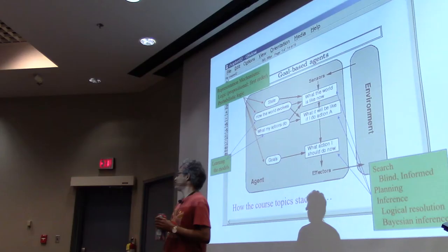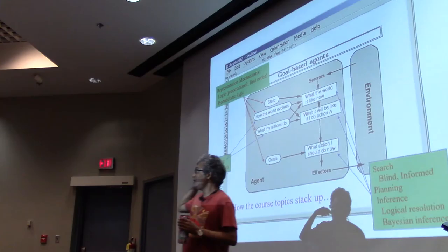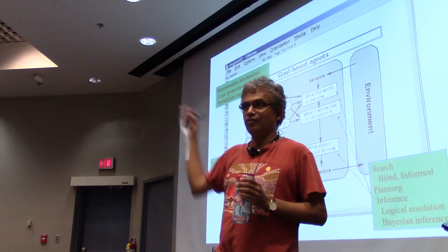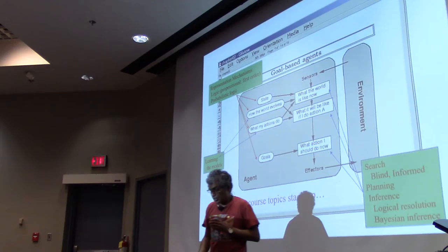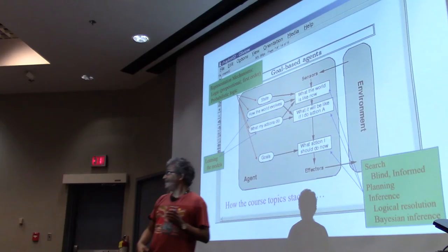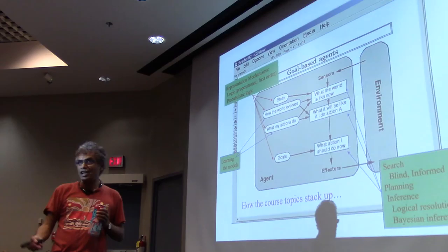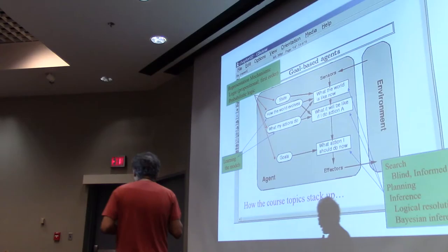We talk about representation and then, given a particular representation, what algorithms can I use — for example, to go from where I am to a goal state? For now, assume the goal is a specific state you want to reach. The question is: what action should I take right now to eventually reach that goal? That is essentially planning.